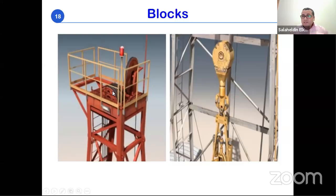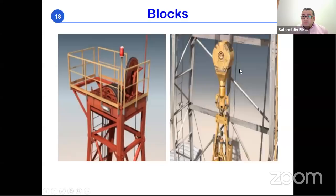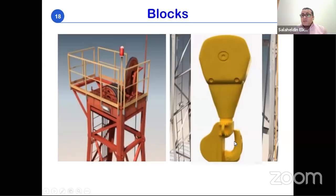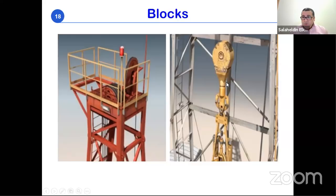The crown block is static — it sits at the top of the derrick and contains sheaves that guide the drilling line. The traveling block and hook are moving parts; they go up and down based on operations needed. The hook connects to the traveling block and is used to hang the drill string or any equipment being run in or out of the well.